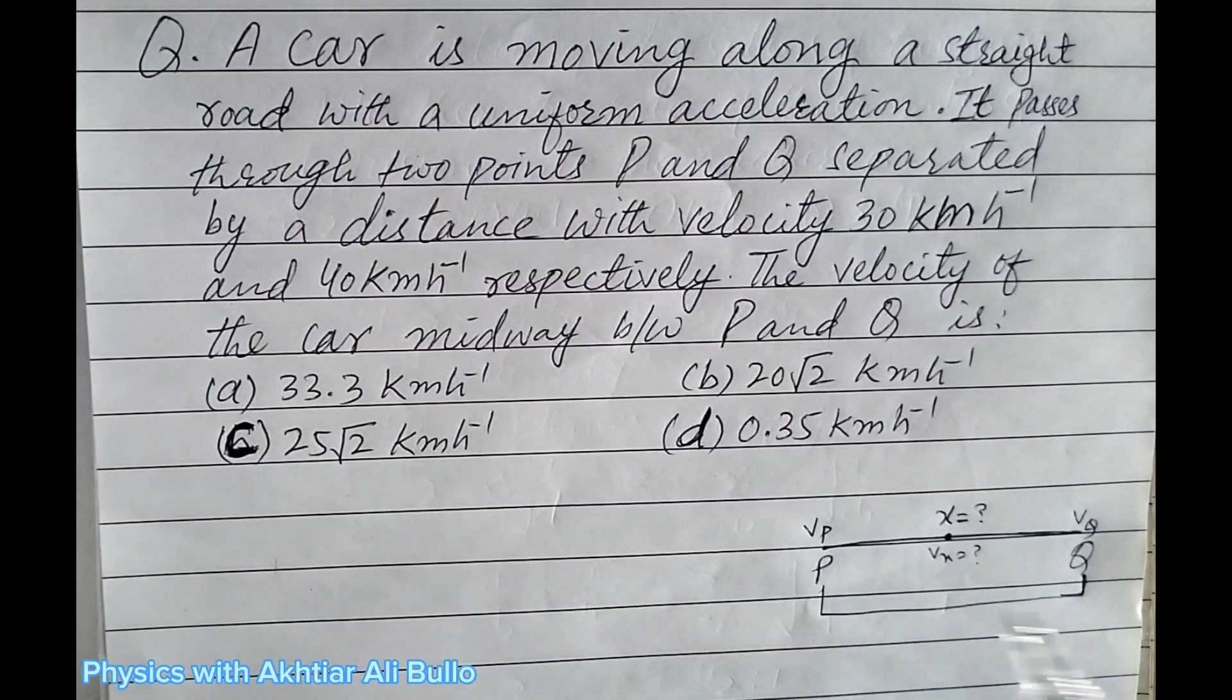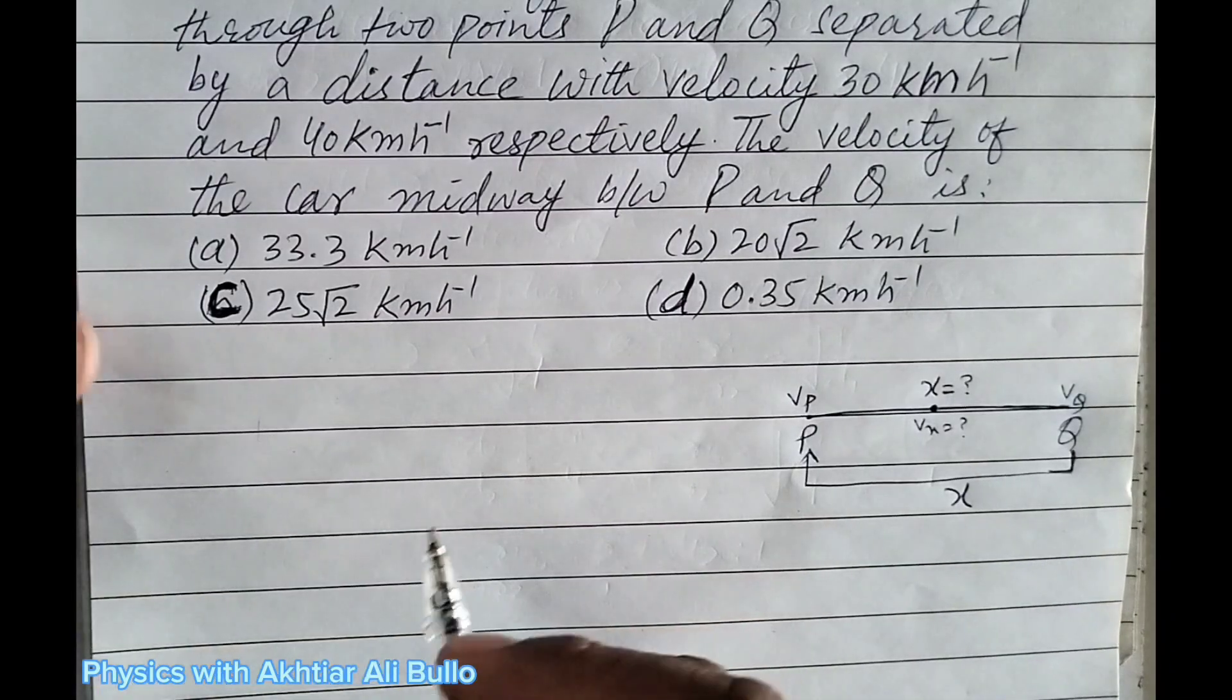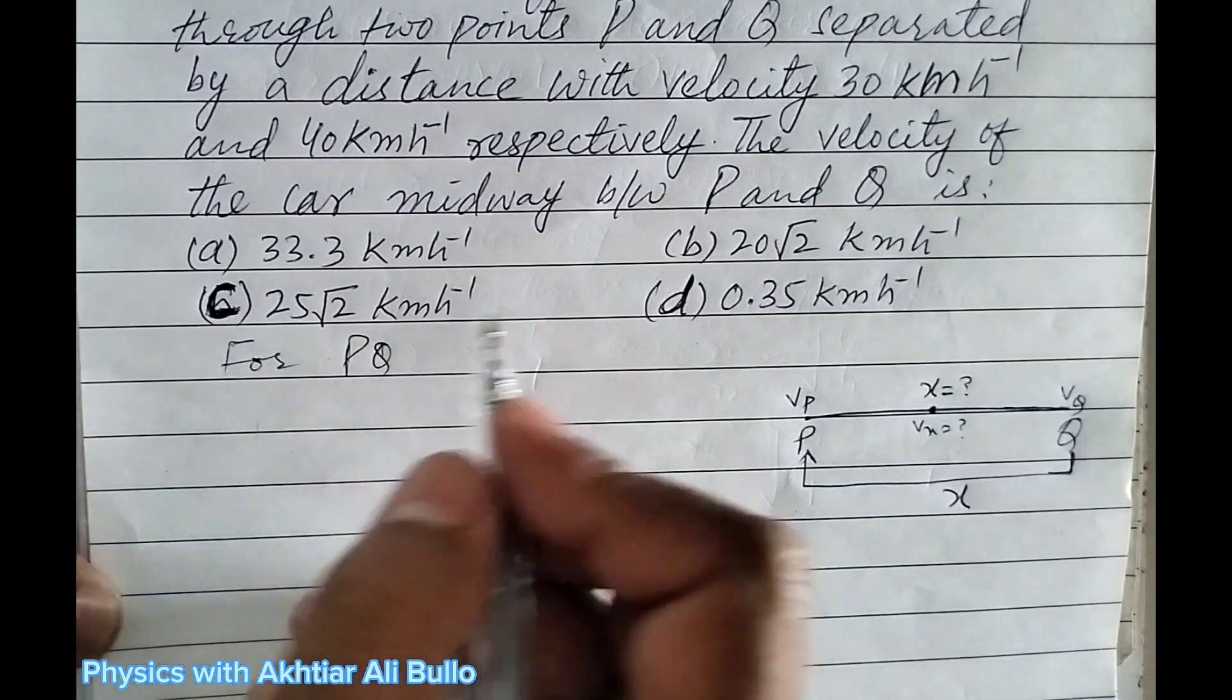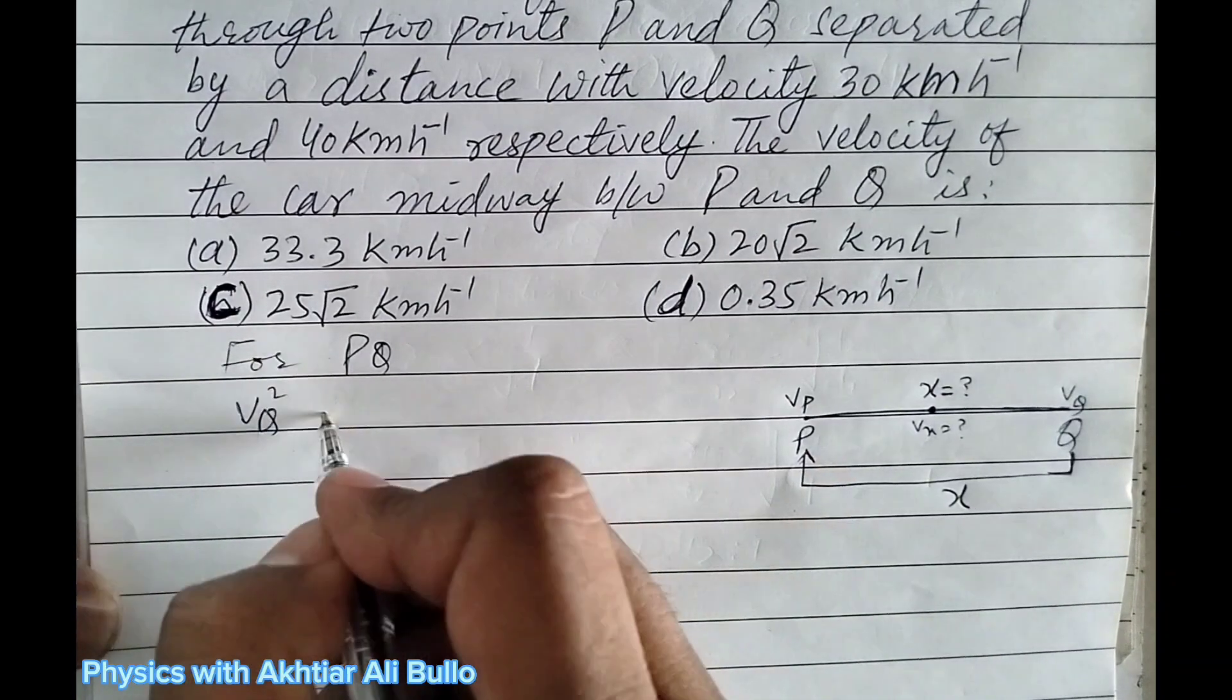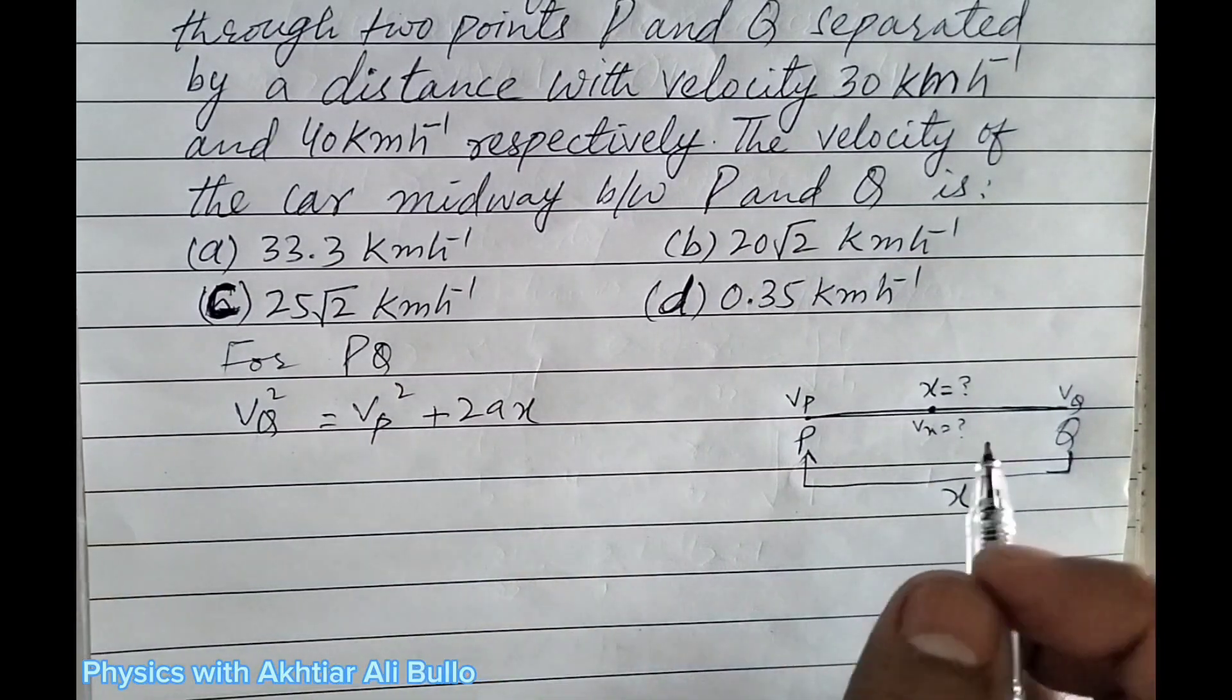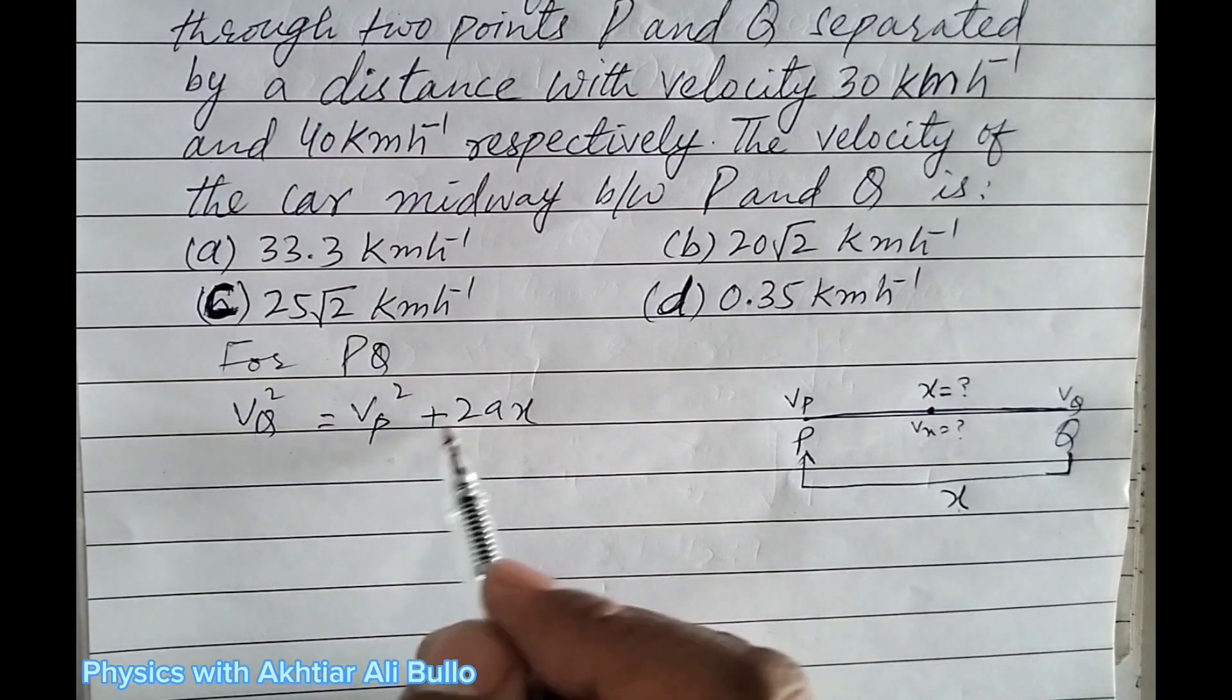As the distance between P and Q is X, for PQ we will use the formula Vq² = Vp² + 2aX. This distance is X, means we will use the third equation of motion.